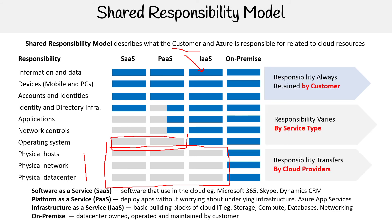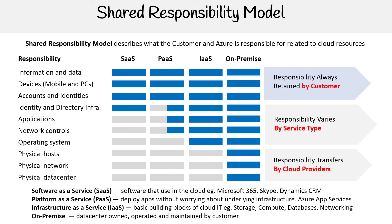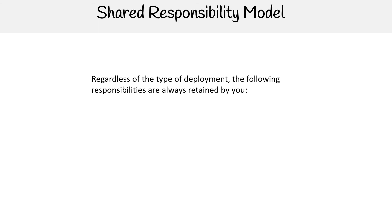If we break it down into three major categories: the top tier is always the responsibility of the customer; the second tier varies per service type; and the bottom tier transfers responsibility to the cloud provider. A few caveats: regardless of the type of deployment, the following responsibilities are always retained by you — data, endpoints, and account access management.